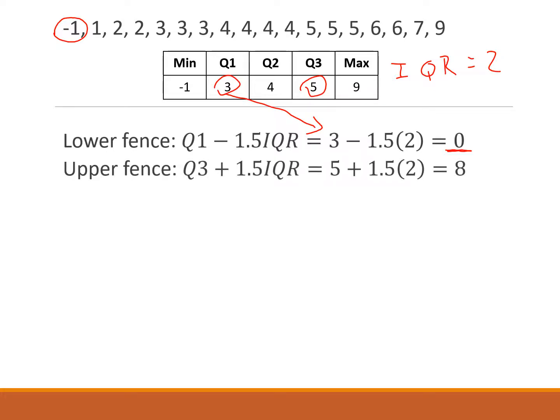Upper fence: same thing except this time we have Q3 plus one and a half times that IQR. Q3 is 5 plus one and a half times 2 gives us 8. Anything above this number would be an outlier. So this 9 is an outlier.